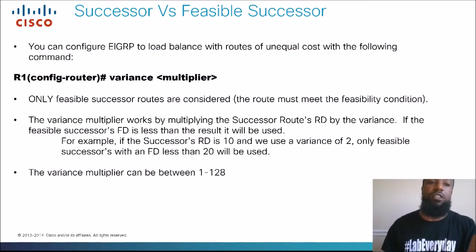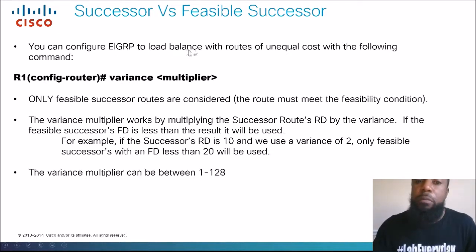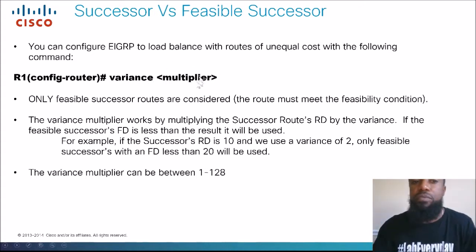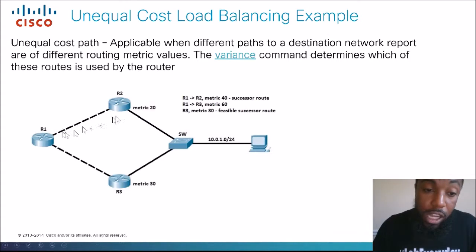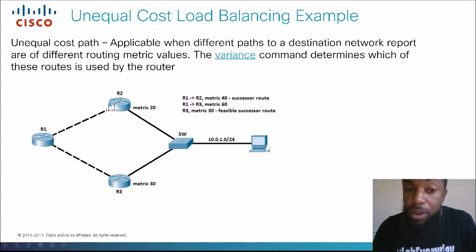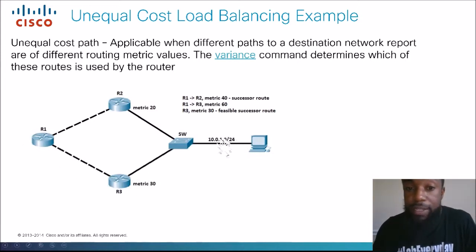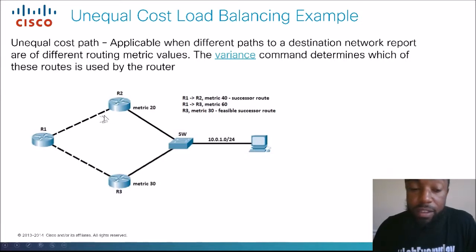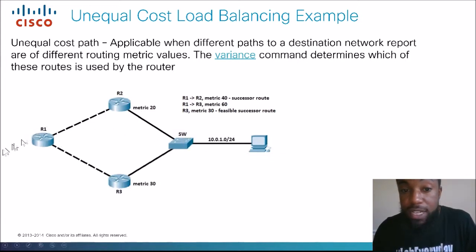The successor is your best route and the feasible successor is your backup route. You can configure EIGRP to load balance with routes of unequal cost using the variance command with a multiplier. Looking at the unequal cost topology: to reach the 10.0.1.0 network, Router 1 to Router 2 gives a metric of 40 — that's the successor route, the best path. Remember, lower metric is better.